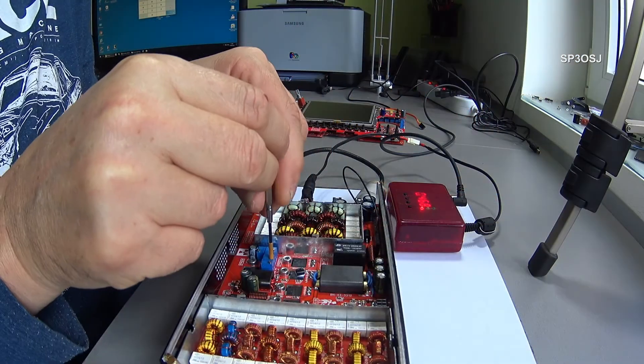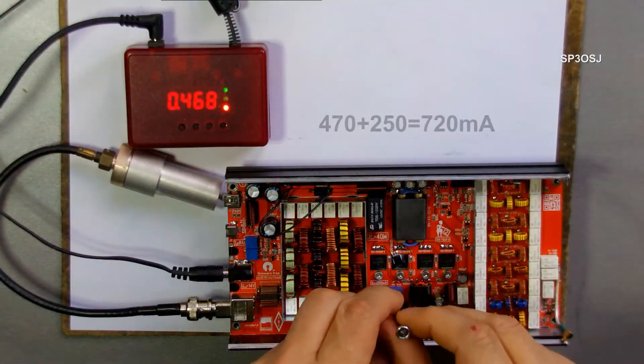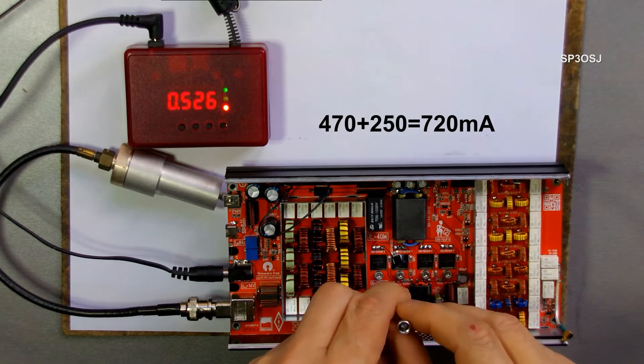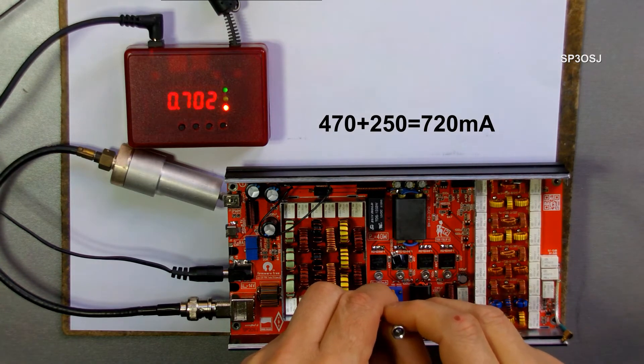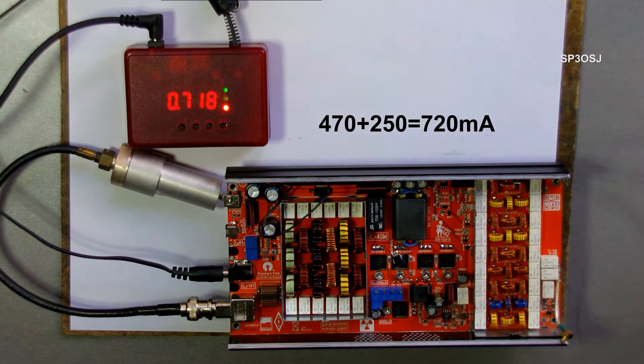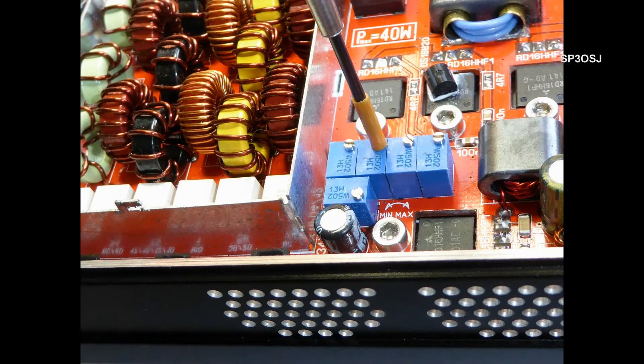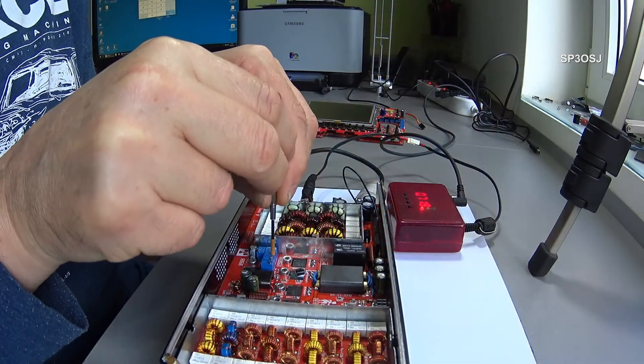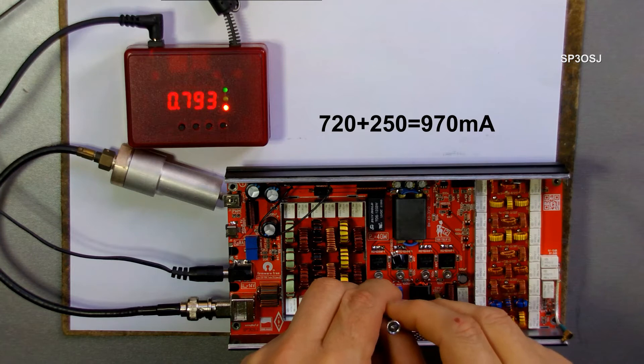Apollo 8, Houston, one minute to LOS. All systems go. Our flight control team, third mission control, has examined the data and it looks good. So we have a combined crew ground decision. We want to go, repeat, go for lunar orbit insertion once.